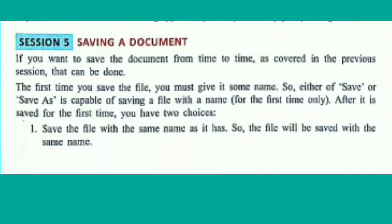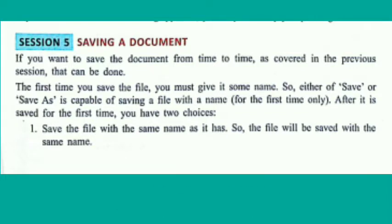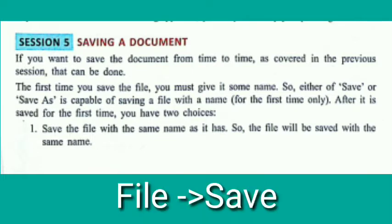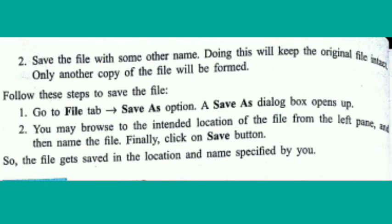Now let us see how to save a document. Click on the File tab; you will find two options: Save and Save As. For the first time you are saving the document, you can choose either Save or Save As — both will save the document. You provide a name for the document and it will be saved. Subsequently, if you want to save the file with the same name, just click on Save. If you want to save the document with a different name, select Save As and give a separate name.